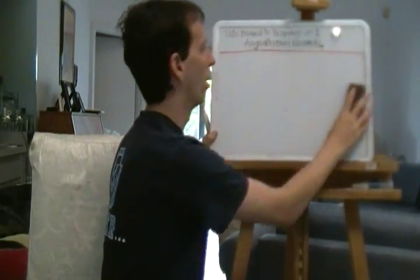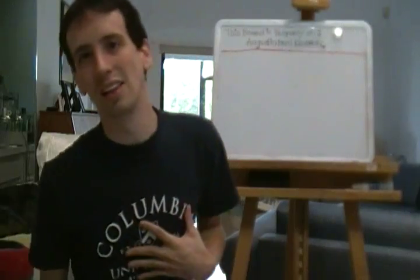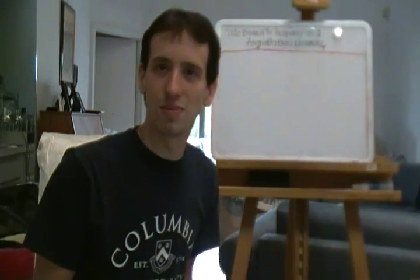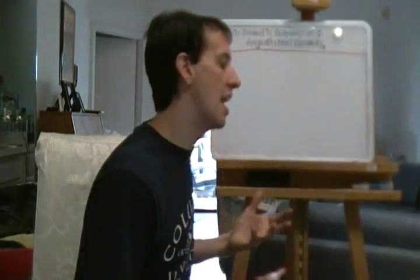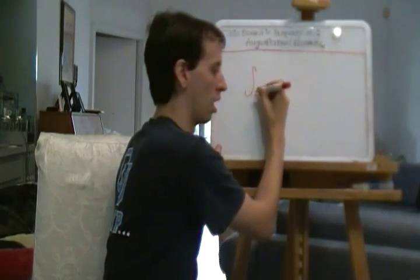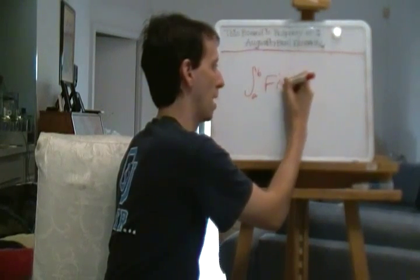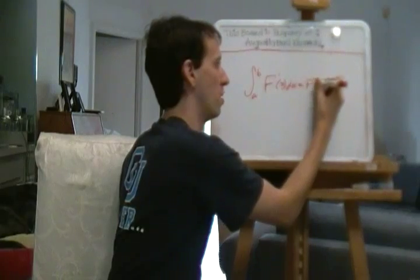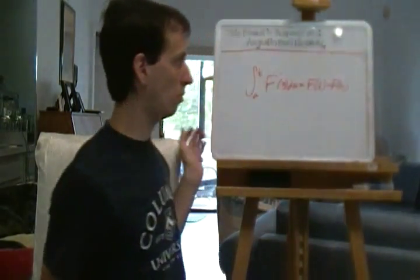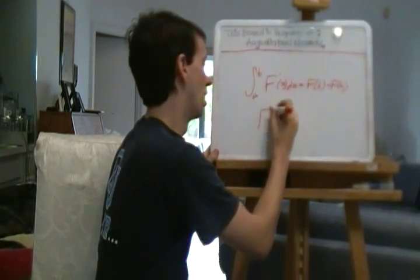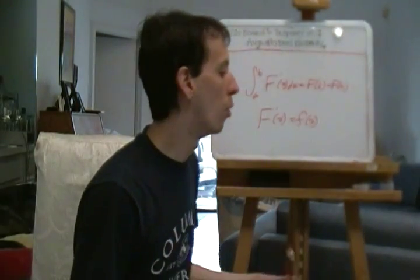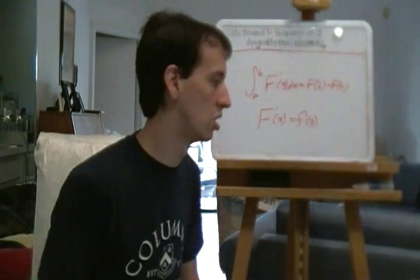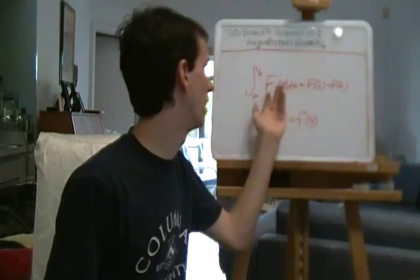This brings us to one final idea in this section: the net change theorem. The net change theorem says that the integral of a rate of change is the net change — ∫[a to b] F′(x) dx = F(b) − F(a). This is basically another way of writing the Fundamental Theorem. If we need to find the integral of some rate of change, we find the antiderivative and evaluate it.